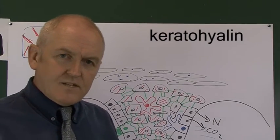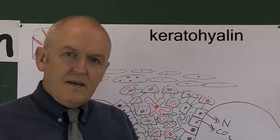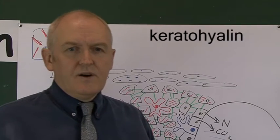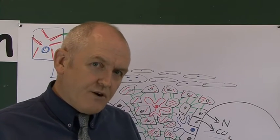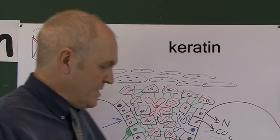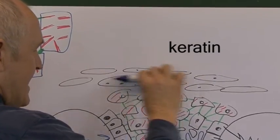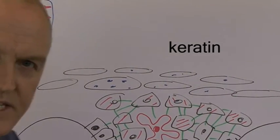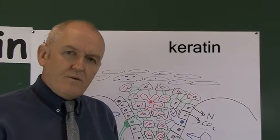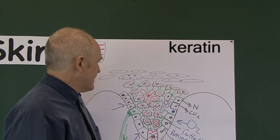So in the stratum granulosum, the little granules contain keratohyalin, which is an enzyme that converts the proteins in the tonofilaments into keratin. This layer is becoming progressively keratinised — the cells are becoming harder — because we're getting nearer to the surface of the body, where we need a hard layer to protect against infection.